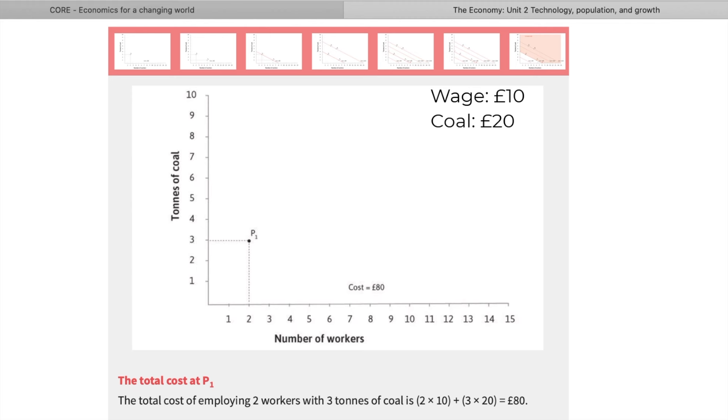Now, given this information, let's calculate the total cost of technology P1. We're going to require two workers, so two multiplied by 10 pounds per hour. Then we're going to need three tons of coal, so three multiplied by 20. Overall, we get 80 pounds for the total cost of technology P1.